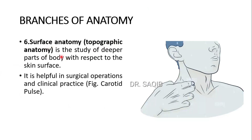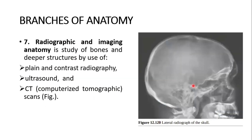Surface anatomy, or topographic anatomy, is the study of the deeper parts of the body with respect to the skin surface. It is very important and extremely helpful in surgical operations and clinical practice. Here you can see the example of the carotid pulse — this is the carotid artery and the physician is palpating it. Radiographic and imaging anatomy is the study of bones and deeper structures by use of plain and contrast radiography, ultrasound, and CT or computerized tomographic scans. Here you can see a lateral radiograph of the skull showing various structures.